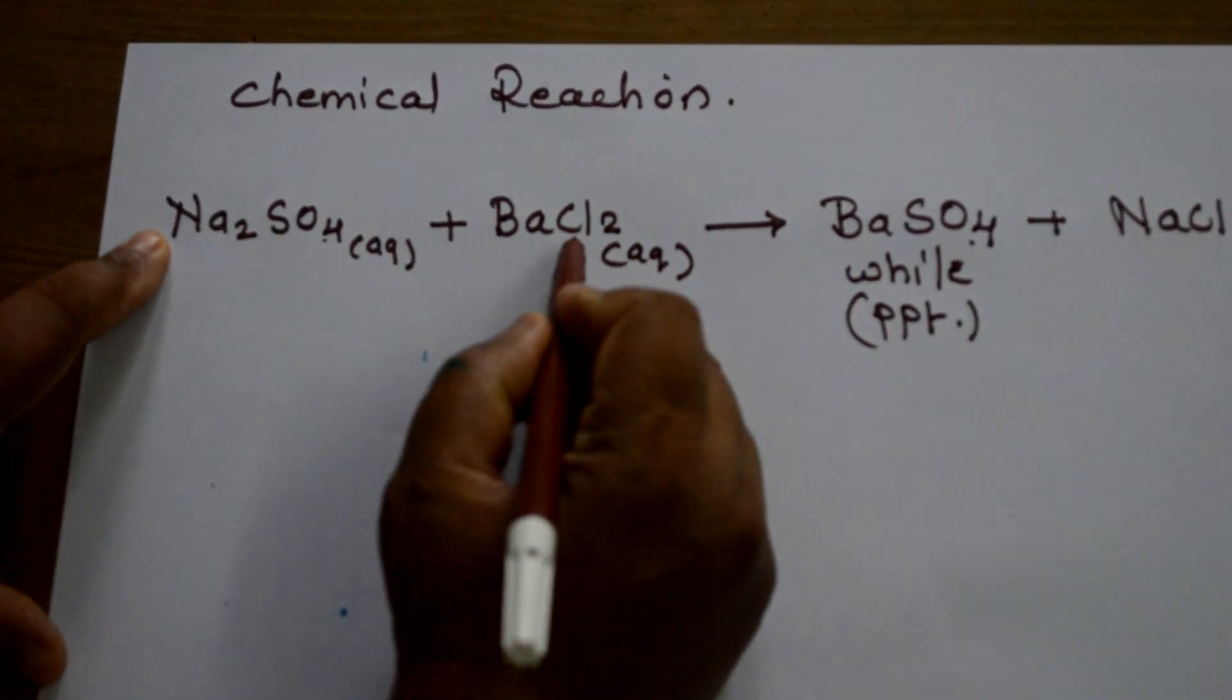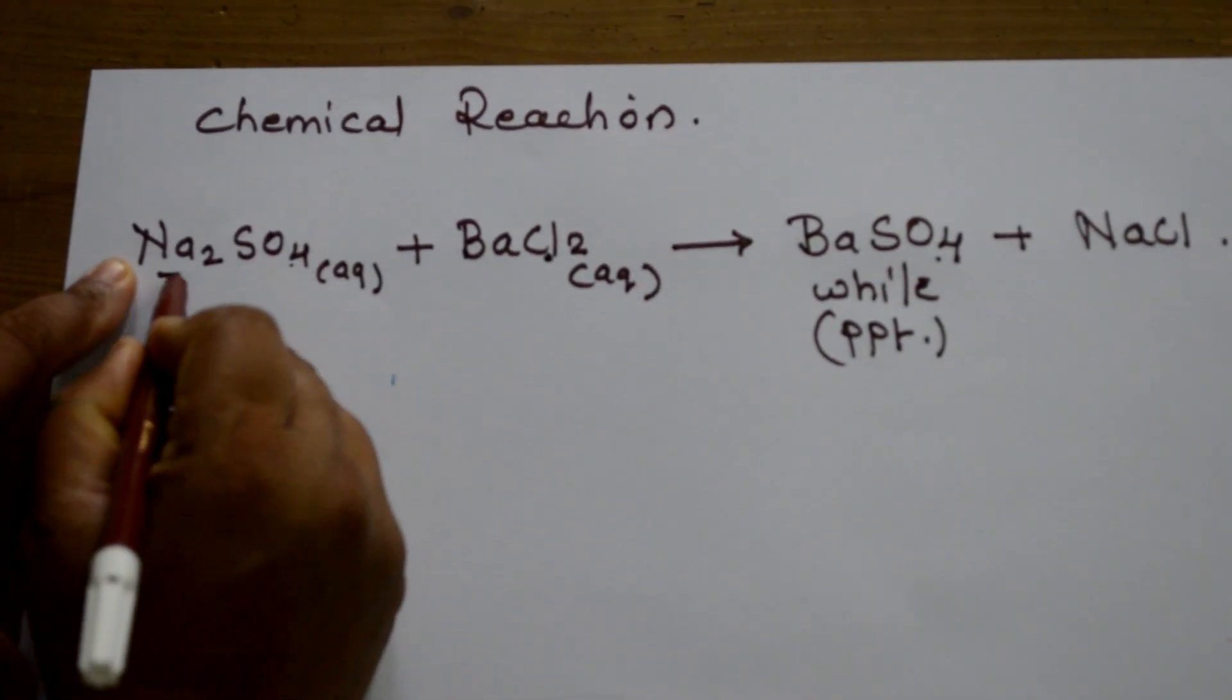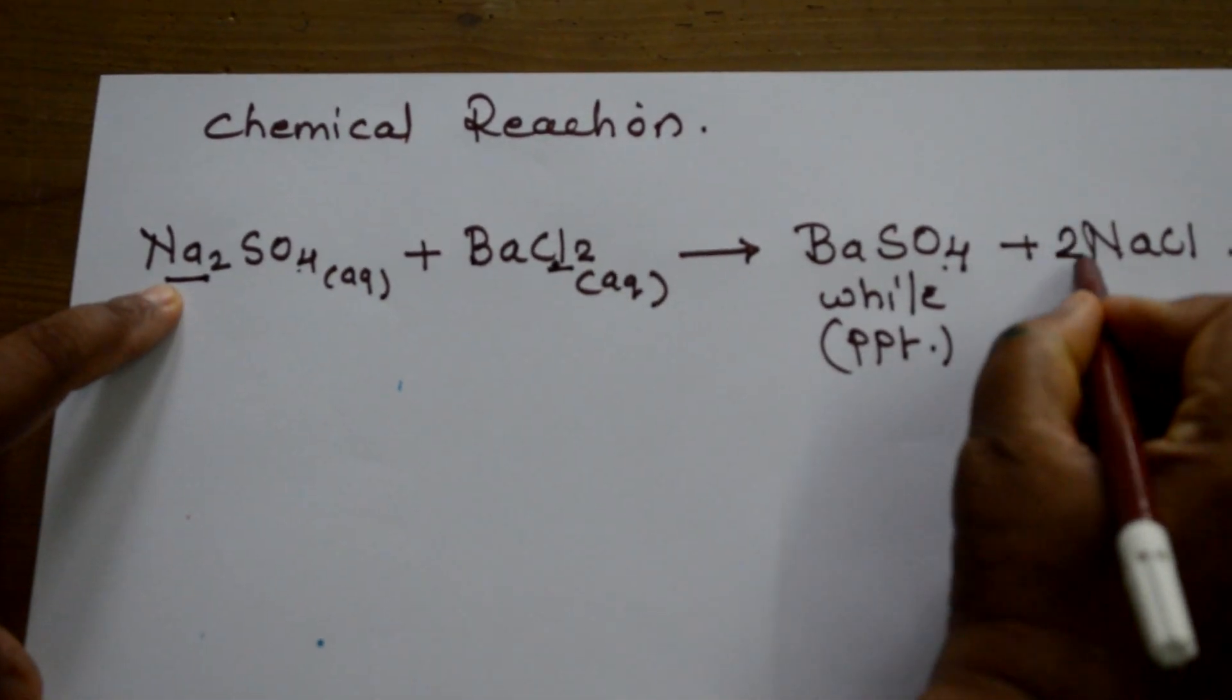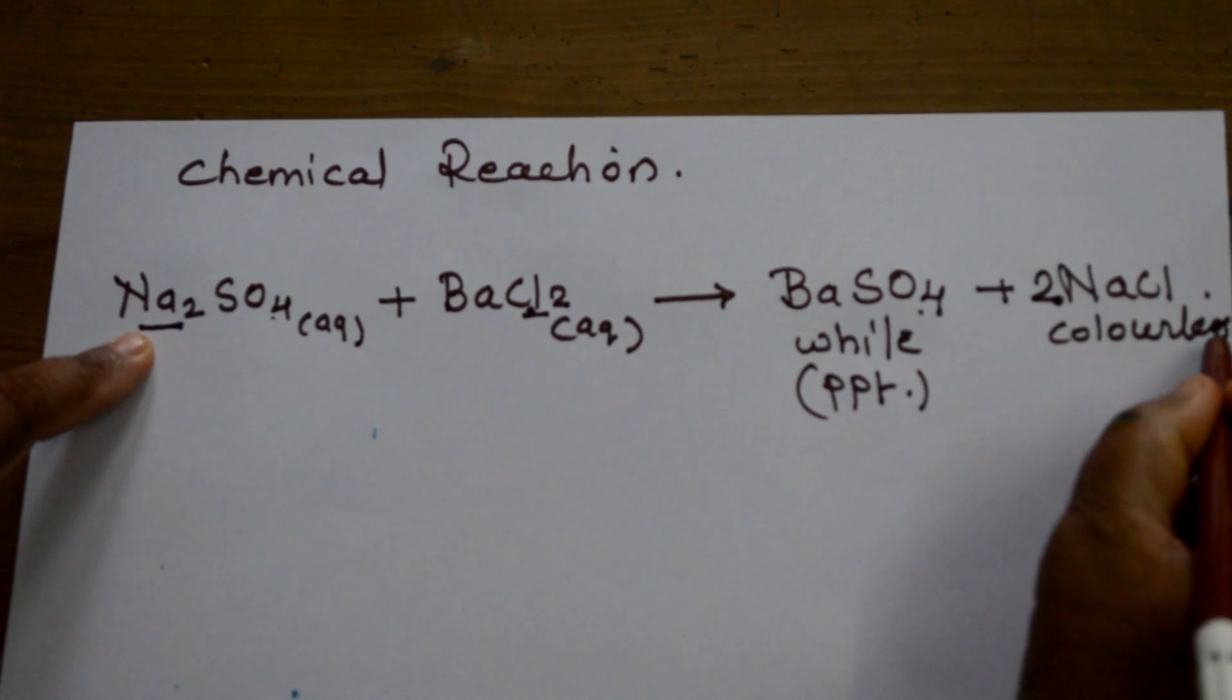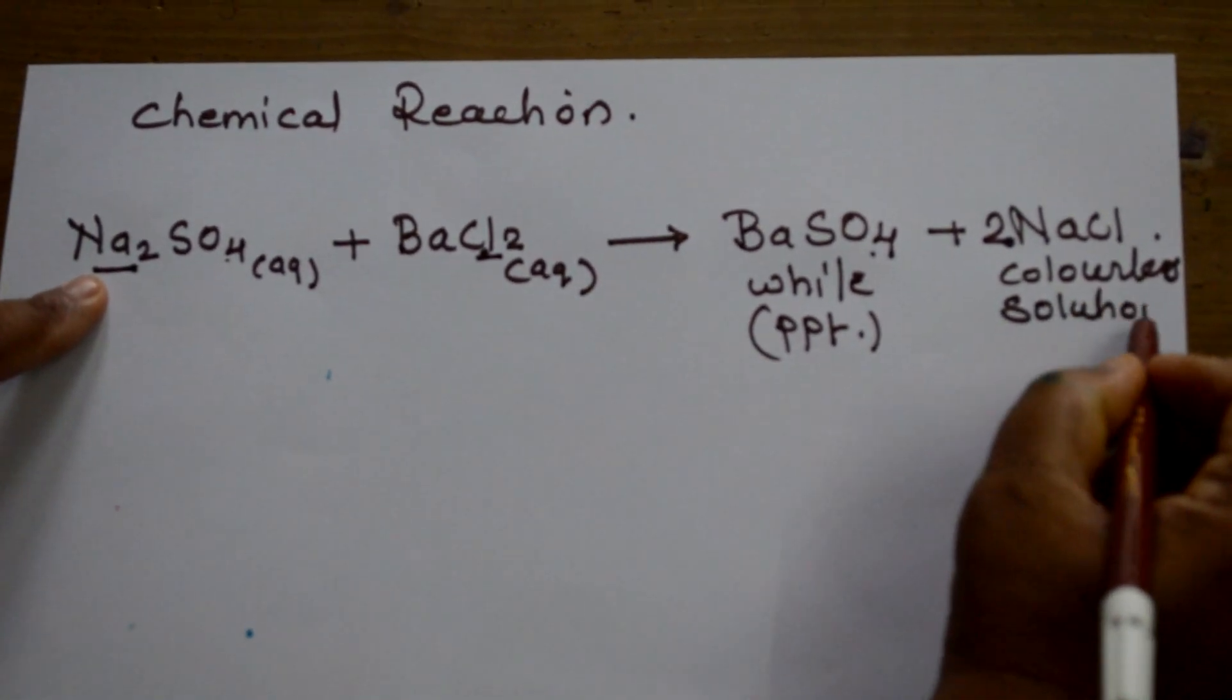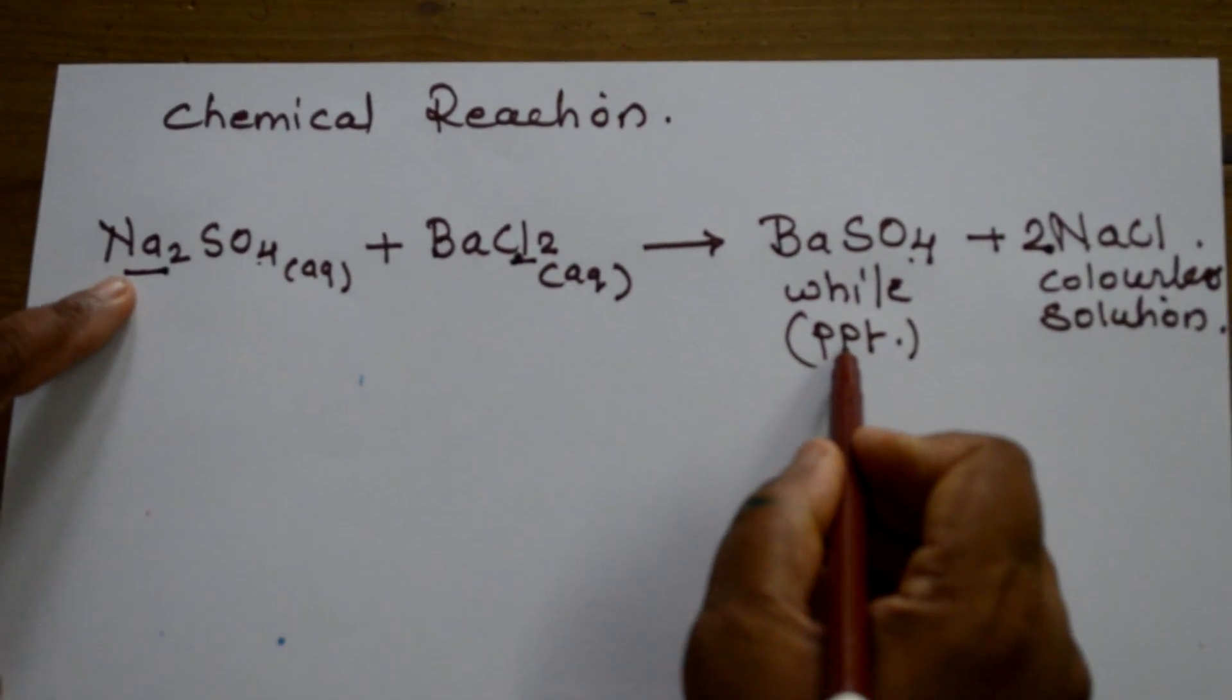Sodium and chlorine gave sodium chloride. Here there are 2 atoms of sodium and 2 atoms of chlorine, and therefore 2 NaCl. It's a colourless solution. Colourless salt in the solution, but this is white PPT.